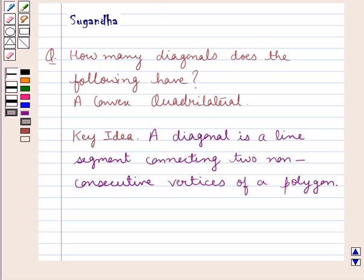Before proceeding to the solution, let's get well versed with the fact that a diagonal is a line segment connecting two non-consecutive vertices of a polygon. This will work as the key idea for this question.